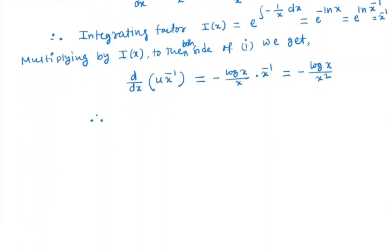So we have u·x^(-1) = -∫(log x)/x dx. Let log x = z, so dx/x = dz and x = e^z.